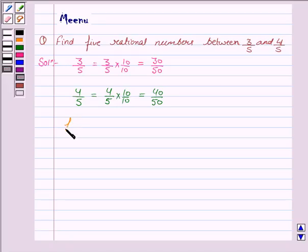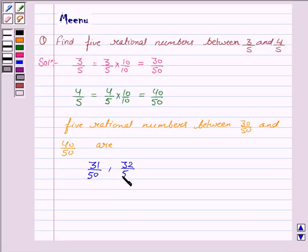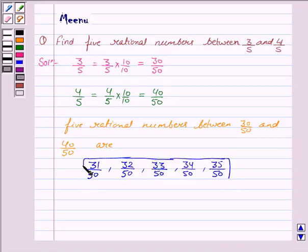Now 5 rational numbers between 30 by 50 and 40 by 50 are 31 upon 50, 32 upon 50, 33 upon 50, 34 upon 50, and 35 upon 50. So these are 5 rational numbers between 3 by 5 and 4 by 5.